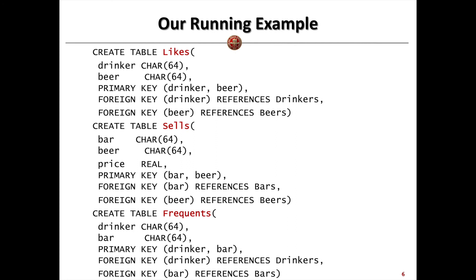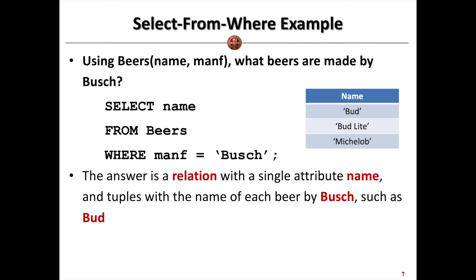So these are the relations we will be working on in the following slides as examples. You just need to remember we have six tables. In the following slides, we will show you some queries working on these tables. Based on these tables, we can write down some standard SELECT-FROM-WHERE statements. Here we have a question: given the Beers table, find what beers are made by Budweiser.